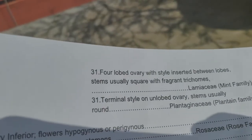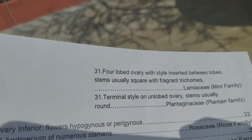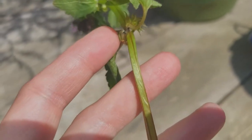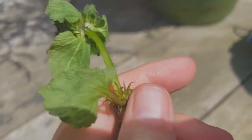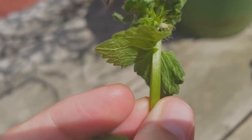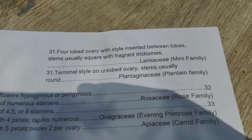So we have a sympetalous flower. The key gives us: four-lobed ovary with style inserted between the lobes, stems usually square with fragrant trichomes — Lamiaceae — or terminal style, unlobed ovary, stems usually round. We had those four funny-looking things for our ovary — that's kind of a dead giveaway. And this looks like a square stem to me. It doesn't really smell nice, but not every member has that — the key says 'usually.' Families are not always consistent. But we definitely had that four-lobed ovary, so the answer is Lamiaceae.